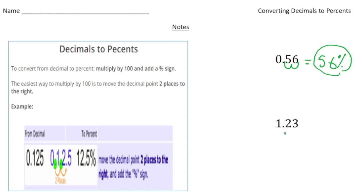The next one we have is 1.23. Again, I'm going to move the decimal two spots to the right, and we end up with 123, and then you add the percent, so it's 123 percent.